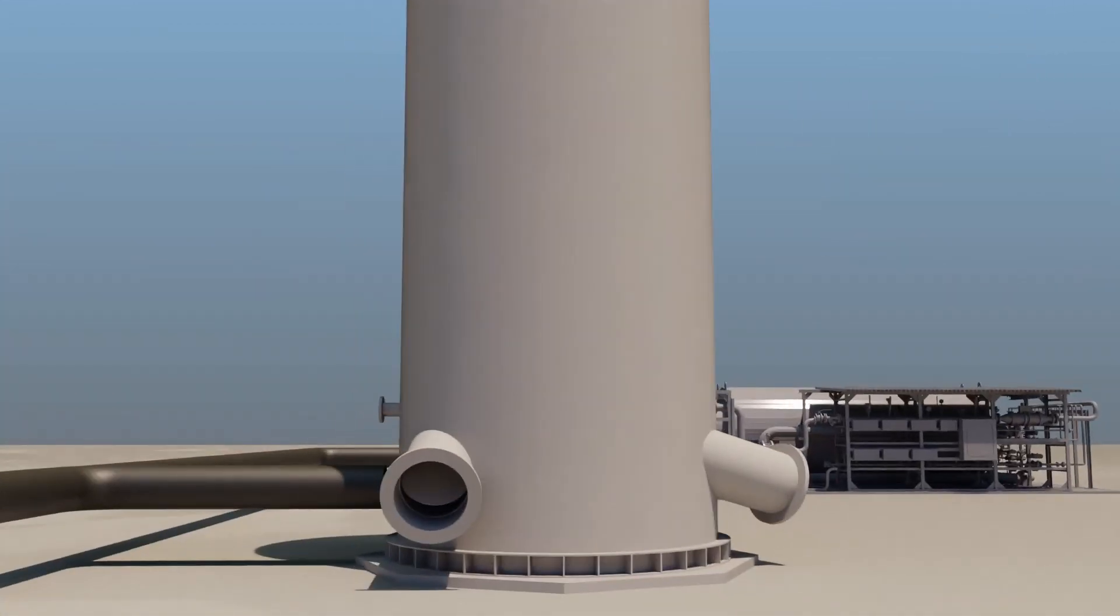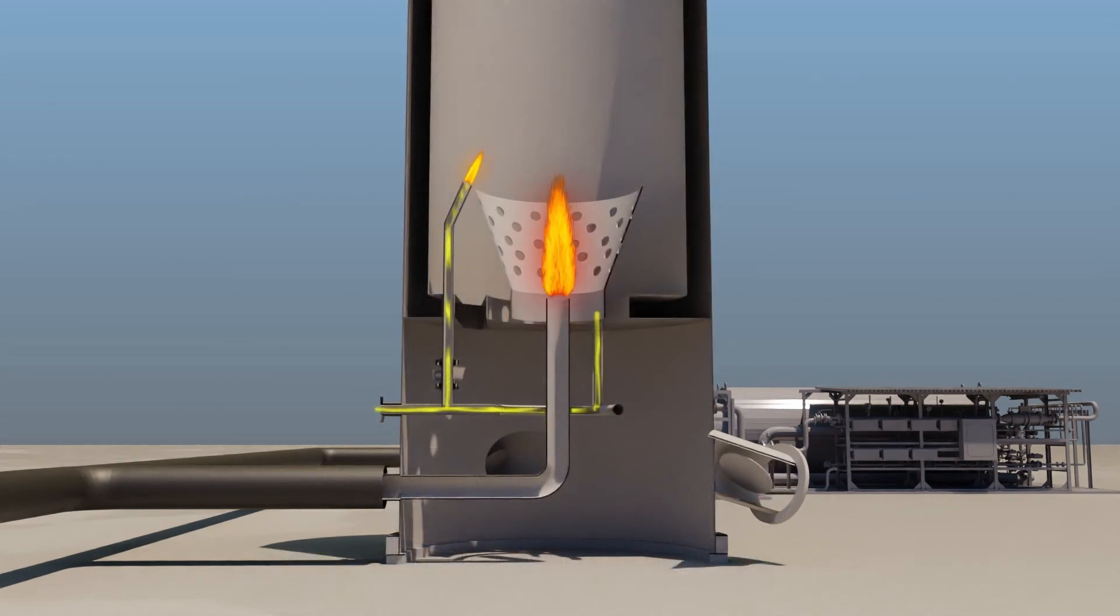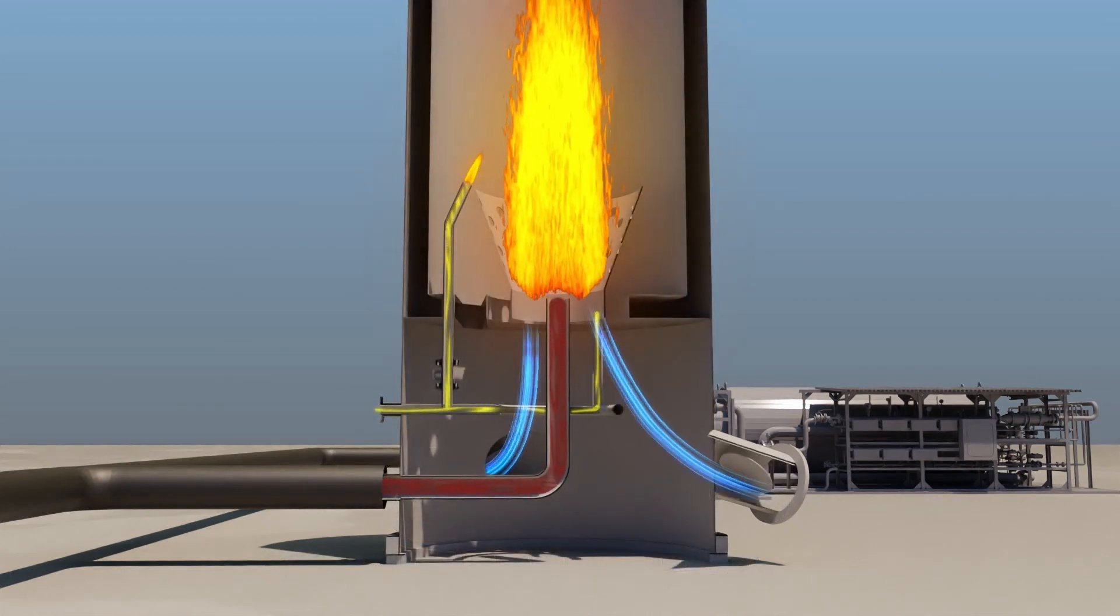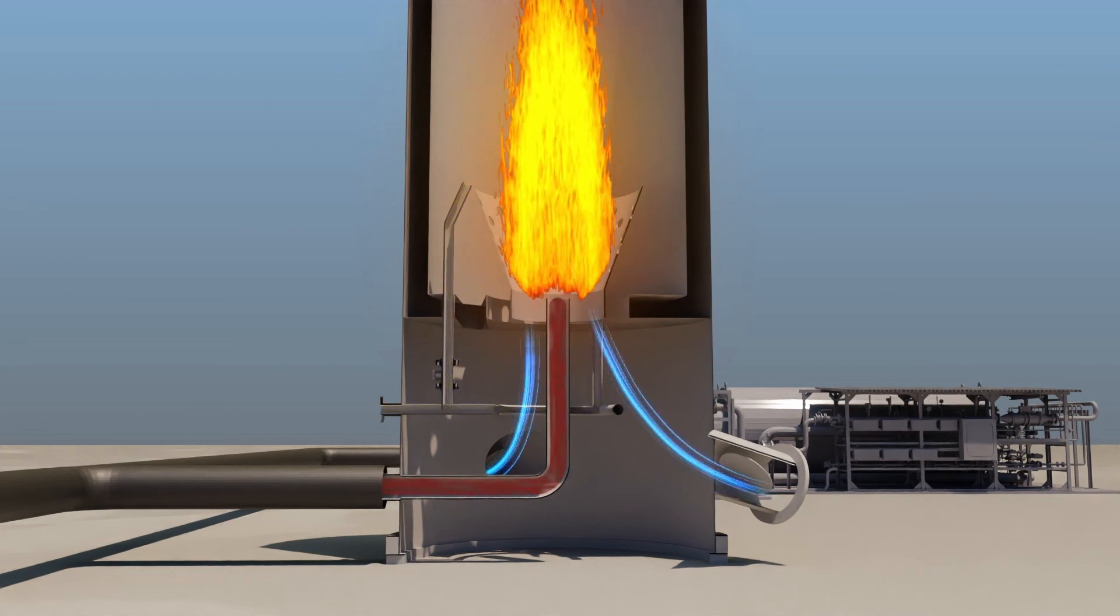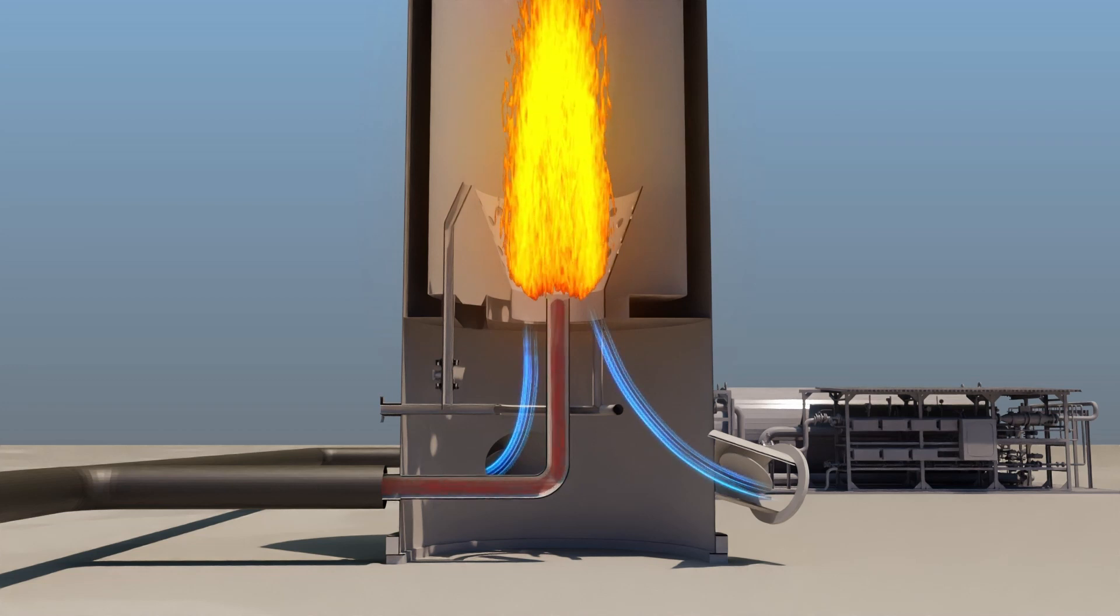In a conventional thermal oxidizer, the vapors are usually injected via a standard lance or flare system with fixed openings. If the vapor flow rate falls below a certain threshold, flashback of the flame becomes possible.